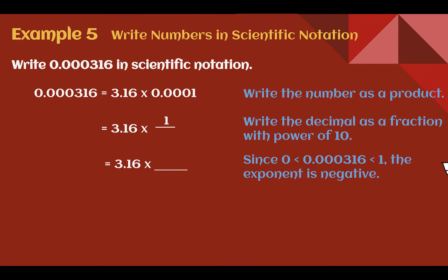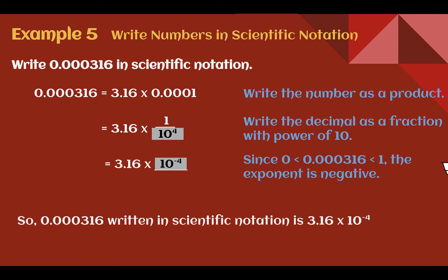Example 5: write 0.000316 in scientific notation. They show the method using a product: 3.16 times 0.0001, which is the same as 1 over 10 to the fourth, so this is 3.16 times 10 to the negative fourth. Using the decimal method: the decimal point goes right between the 3 and the 1, and I had to move 1, 2, 3, 4 places in the negative direction — that's where we get our exponent of negative 4.